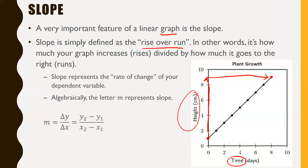Algebraically — and we'll get to that another day when we talk about y = mx + b — the letter m represents slope. Algebraically, you can express slope as m = Δy / Δx, which is just a fancy way of saying the change in your y divided by the change in your x.